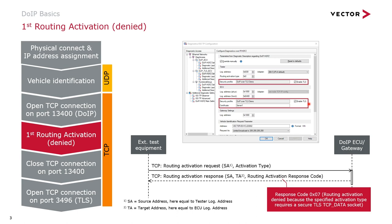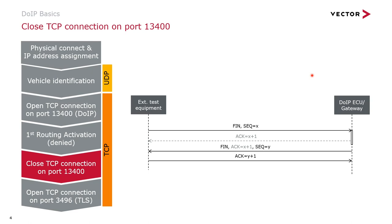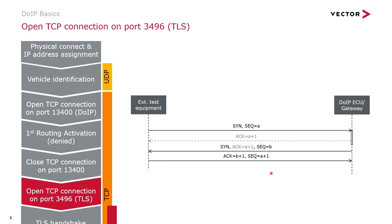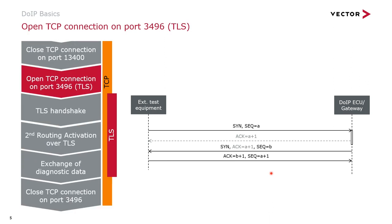We will have a look at the details of the CANU configuration in our next video on this channel. If the ECU responded to the Routing Activation request with Response Code 7, in the next step the tester closes the normal unencrypted TCP connection on port 13400, followed by opening up a new TCP connection on the ECU, this time using the TLS port 3496.